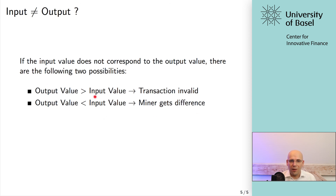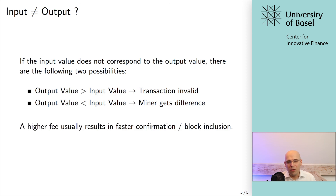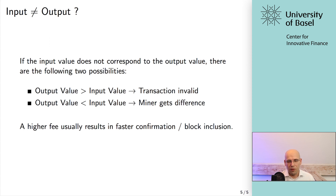All you need to know is that the transaction is still valid when the output value is smaller than the input value, and the difference can be collected by the miner — the person who confirms the transaction on the blockchain. However, when the output values are larger than the input values, the transaction will be invalid. You cannot spend more than what you put in — you cannot put one Bitcoin as input and try to create new UTXOs worth two Bitcoin. The output value being smaller than the input value is fine; the miner gets the difference and that incentivizes miners to include your transaction in the next blocks. Next time we will look into the scripting language and various conditions. Stay curious, see you soon.